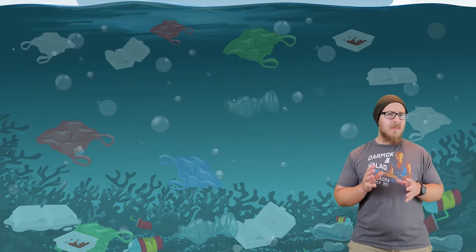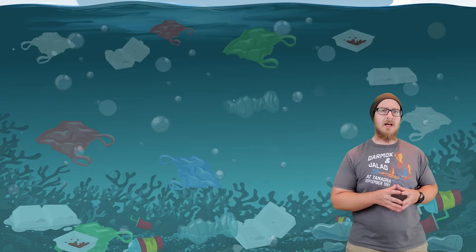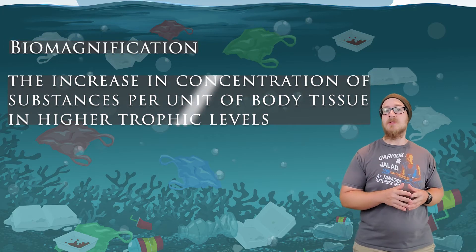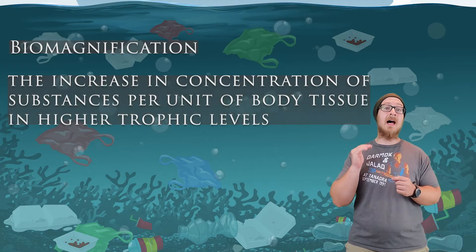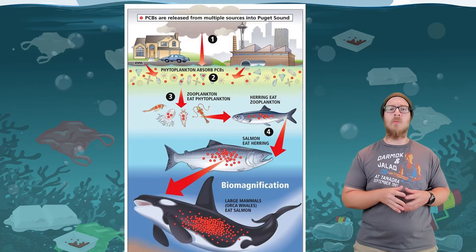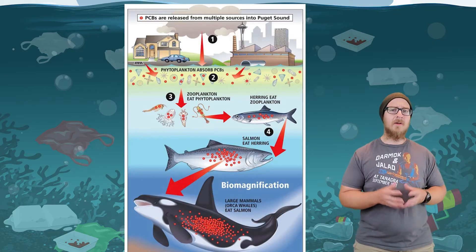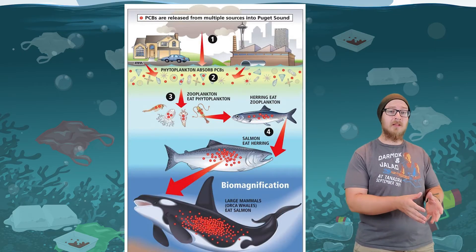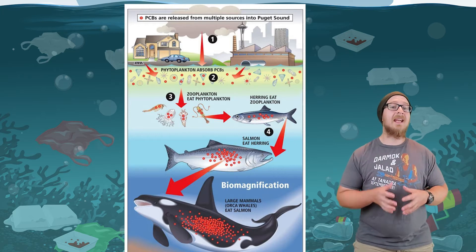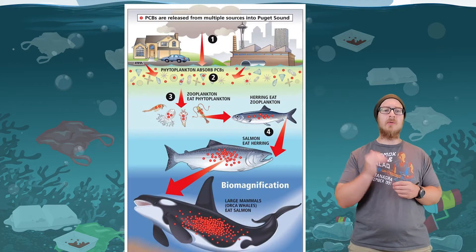Many pollutants that accumulate in tissue also biomagnify. Biomagnification is the increase in concentration of substances per unit of body tissue at higher trophic levels. A pollutant enters waterways and is absorbed by phytoplankton through diffusion. The phytoplankton are eaten by zooplankton, which are eaten by other organisms, and so on. At each successive trophic level, the concentration of the pollutant increases.